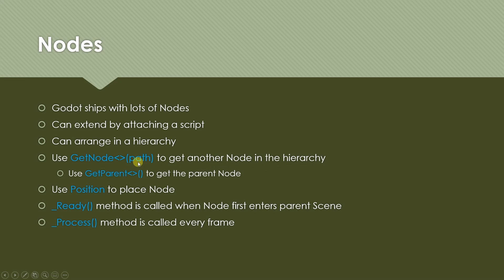The path syntax for get_node is similar to how you specify paths in a command prompt. For example, dot-dot means the parent node, dot means the current node, and slash means go to the next one. I'll show you an example of that as well. In a special case there is a get_parent function that gives you your parent node — you could also use get_node and just pass dot-dot to get the parent.